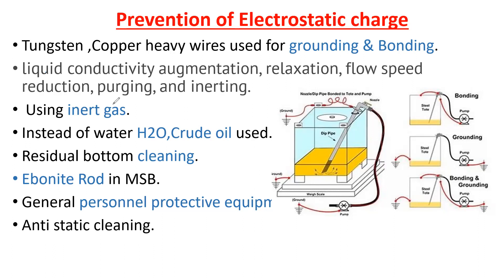To summarize the prevention methods: tungsten copper thick wires for bonding and grounding, liquid conductivity augmentation, controlling the pressure and speed at which water is used to clean tanks, purging and gas freeing using inert non-combustible gases, using crude oils instead of water for residual bottom cleaning, measuring charge levels in the MSB board, the ebonite (butyl rubber) rod in the MSB board which absorbs static charge, and anti-static cleaning methods.